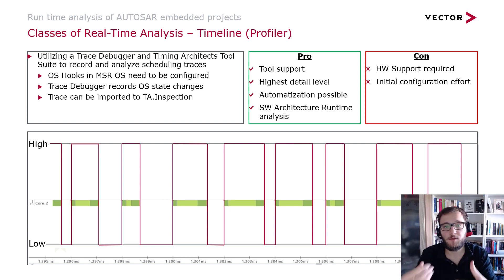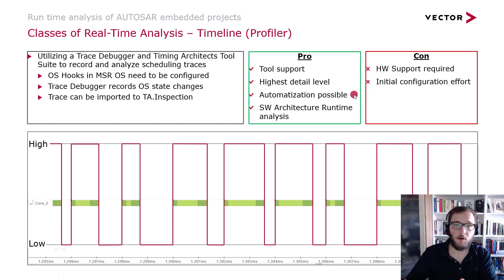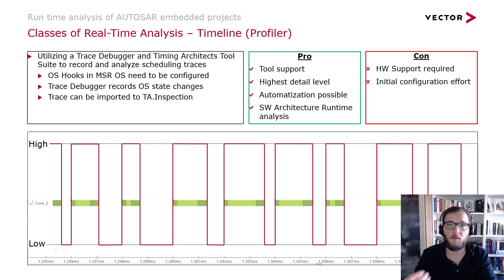Since you have tool support, there is also the possibility to automate something like this. Once you have spent the initial configuration effort, you can reuse it over and over again, allowing you to integrate such a solution within your CI system. With every build you are automatically recording a trace, analyzing a trace, and you can constantly keep track of the different timing requirements and the overall CPU utilization of your system.